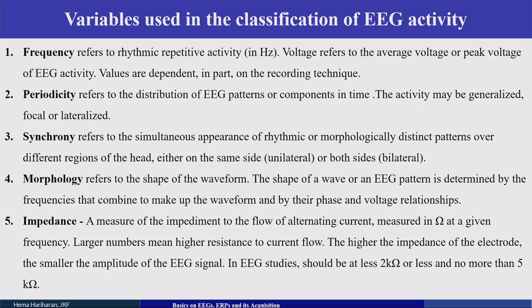Voltage refers to the average or peak voltage of the EEG activity. Periodicity refers to the distribution of EEG patterns or components with time — the activity can be focal or lateralized. Synchrony is the simultaneous appearance of rhythmic and morphologically distinct patterns over different regions of the head, either on the same side or both sides.